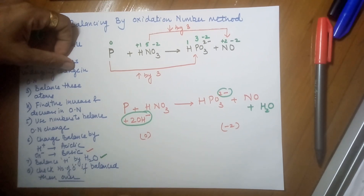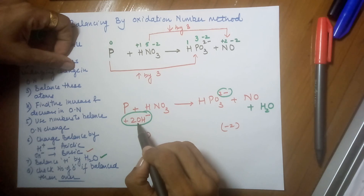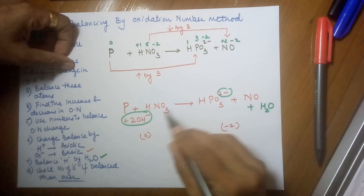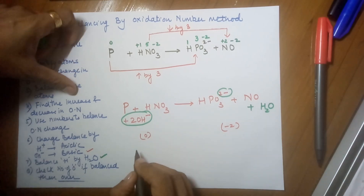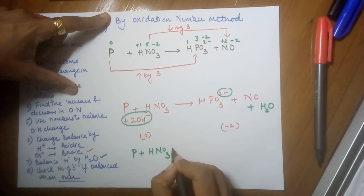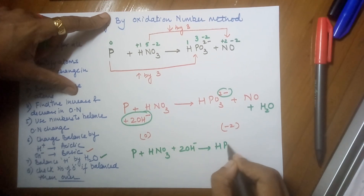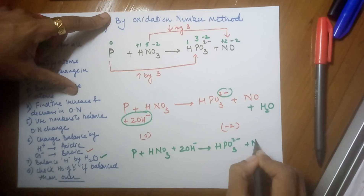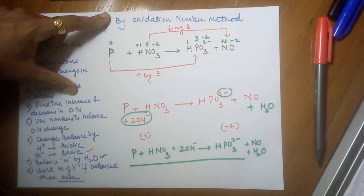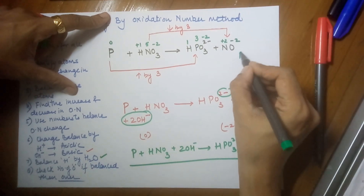Check the oxygen numbers: three plus two gives five on the left side, and three plus one plus one gives five on the right side. Both sides have the same number of oxygen atoms, so the balancing is complete. The final balanced equation is: P + HNO3 + 2OH⁻ → HPO3(2-) + NO + H2O.